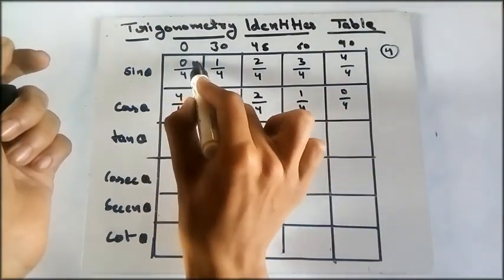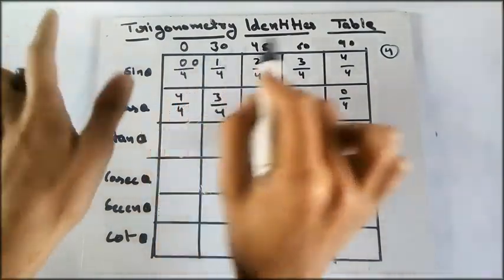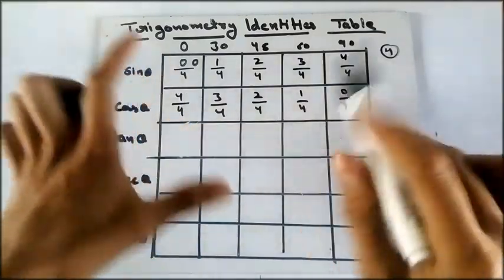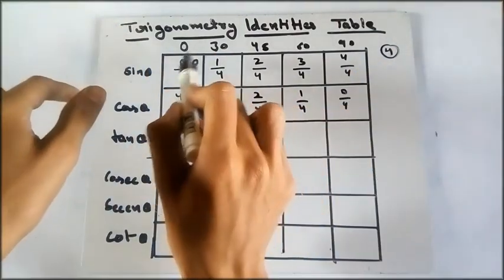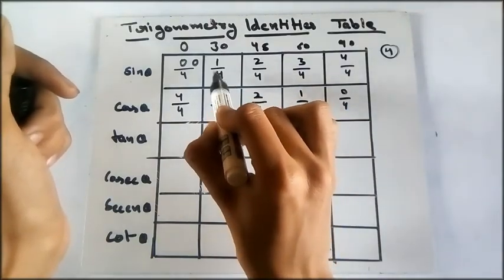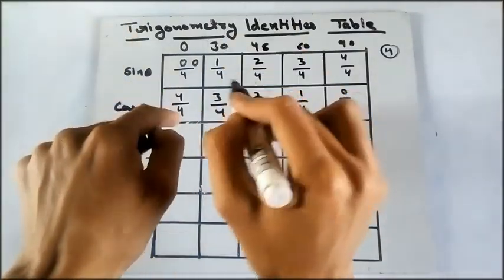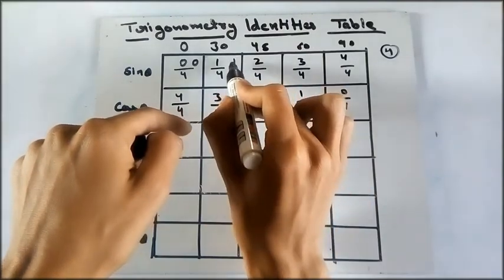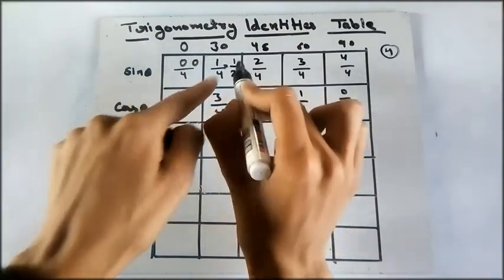Now you got the values of sine x and cos x. How? It's easy. Which is 0 upon 4 is 0, and you have to take root of everything in here table. So root 0 is 0. Now this is 1 upon 4, and root 1 upon 4 is 1 upon 2, which is the value of this.